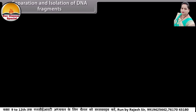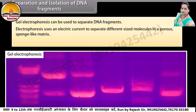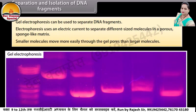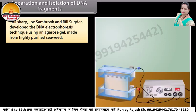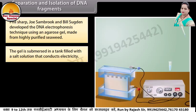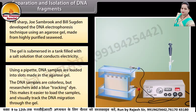Separation and isolation of DNA fragments. Gel electrophoresis can be used to separate DNA fragments. Electrophoresis uses an electric current to separate different-sized molecules in a porous, sponge-like matrix. Smaller molecules move more easily through the gel pores than larger molecules. Phil Sharp, Joe Sambrook, and Bill Sugden developed the DNA electrophoresis technique using an agarose gel made from highly purified seaweed. The gel is submerged in a tank filled with a salt solution that conducts electricity. Using a pipette, DNA samples are loaded into slots made in the agarose gel. The DNA samples are colourless, but researchers add a blue tracking dye.